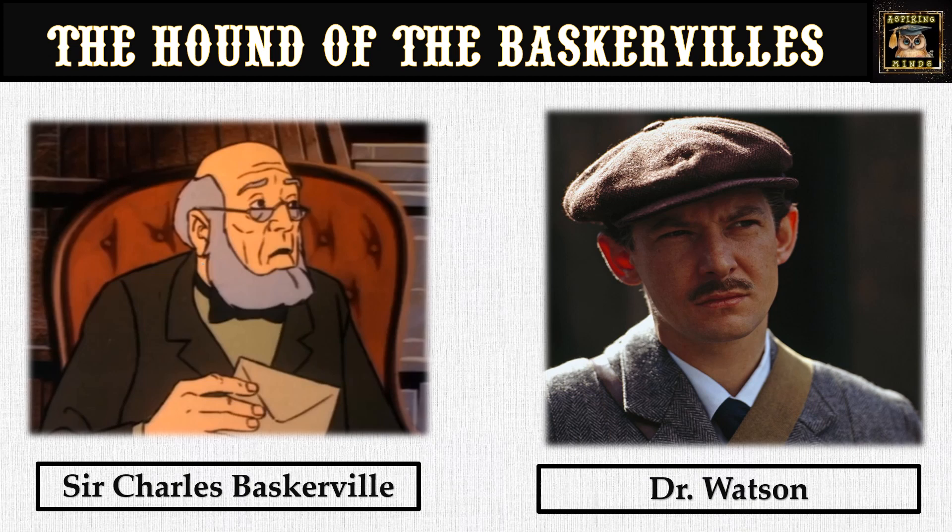The story begins with the death of Sir Charles Baskerville in a very mysterious manner on the moors of Devon — a moor being a kind of grassland. Dr. John Watson shares the legend of how a demonic hound haunts the Baskerville family and has been a constant source of threat. A hound is a wild dog. Sherlock Holmes is then consulted to investigate Sir Charles's death, and sends Dr. Watson to Baskerville Hall to protect Sir Henry, the next heir.